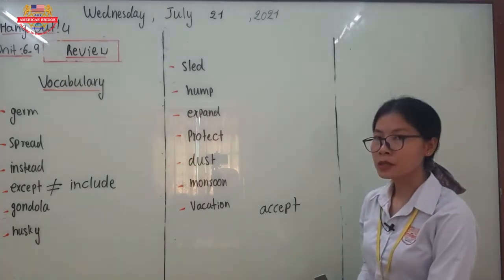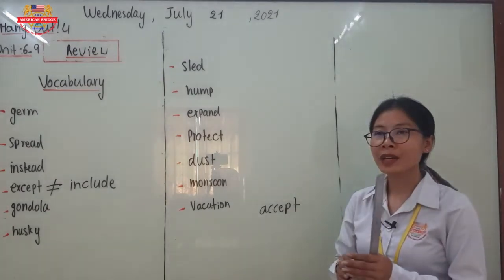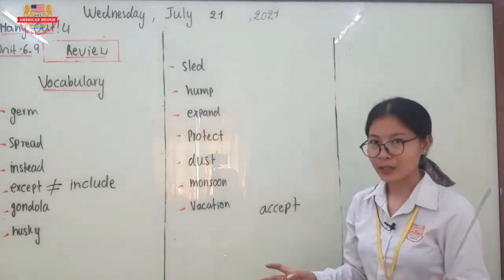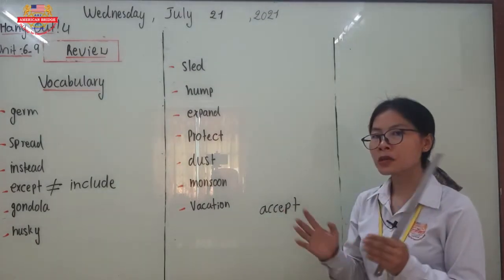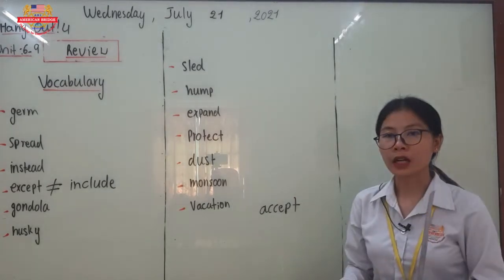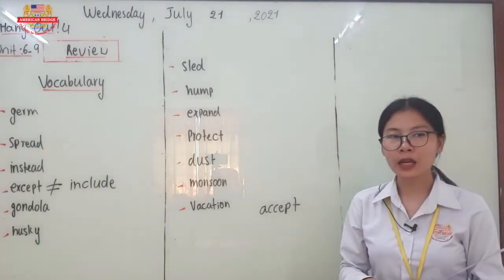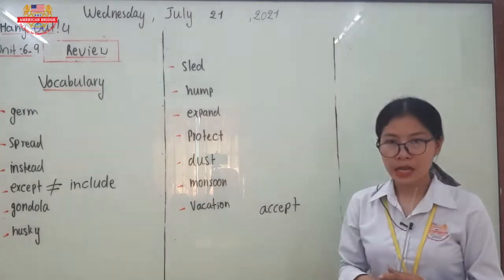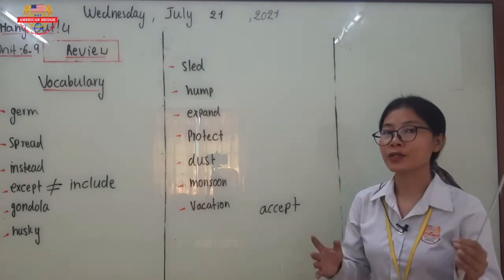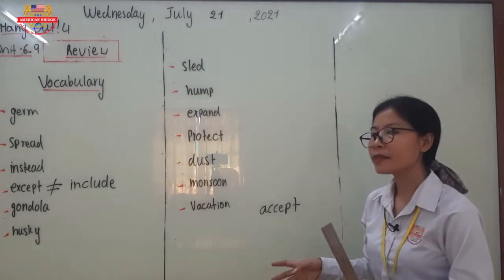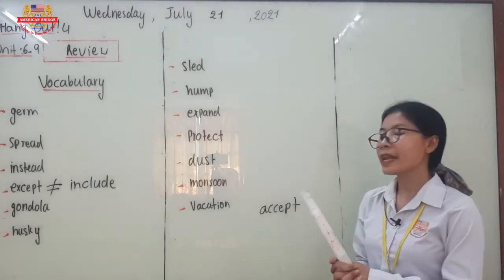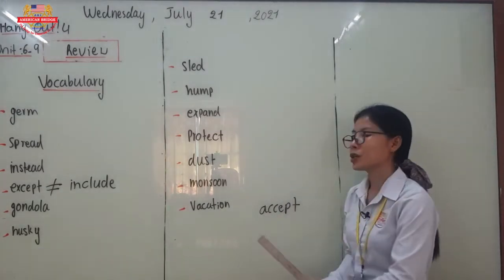Next, let's go to 'monsoon.' Monsoon refers to the kind of dry and hot weather. Normally this kind of weather occurs in Asian countries, like in our country, as well as Thailand, Laos, and India.